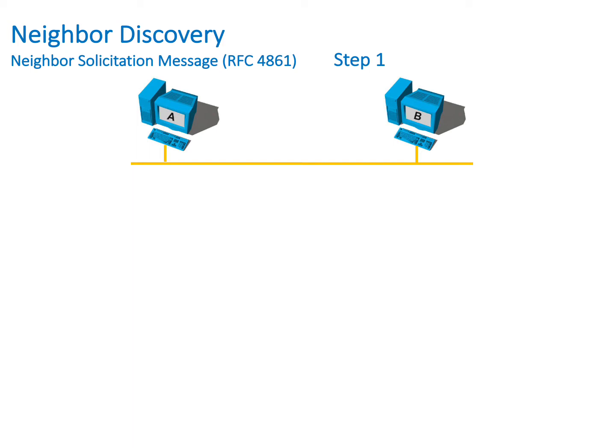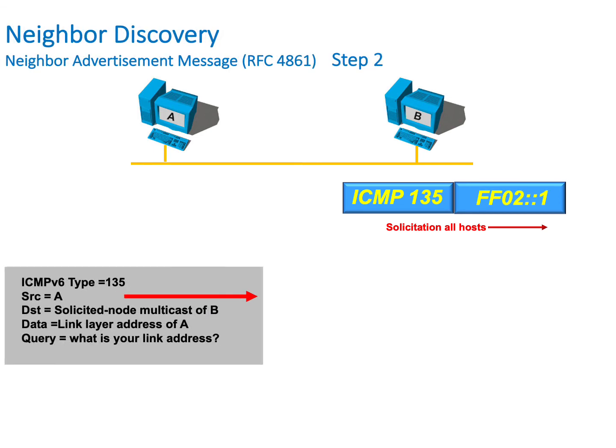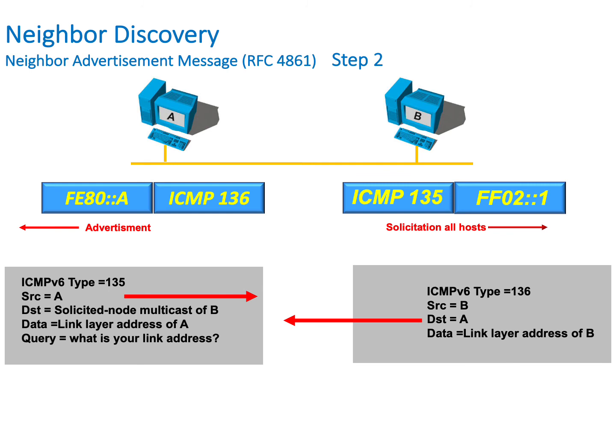Assuming we have a unique address, we can now begin the neighbor discovery process. In this example, host A sends out a multicast neighbor solicitation message to all hosts with an ICMP value of 135. Host B responds to the link local address of host A with a neighbor advertisement message having an ICMP value of 136. Note that link local addresses cannot be passed through a router onto a different segment — they can only be used on a link local or local link.